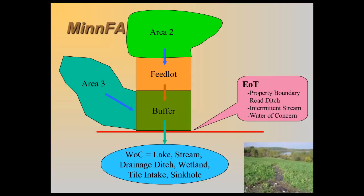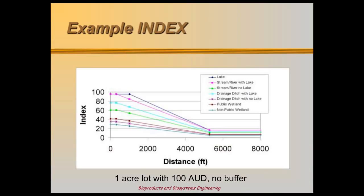But first, we'll show you what MinFarm does with all that data. The index is what MinFarm calculates as the amount of pollutants leaving the end of treatment, the distance from end of treatment to a water of concern, and the type of water of concern. This graph shows the different index values for any waters of concern at varying locations downstream of a one-acre feedlot with a runoff problem.